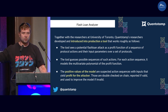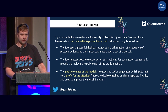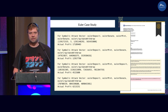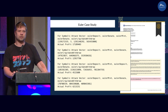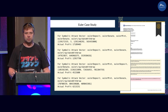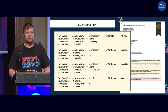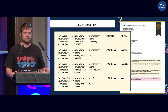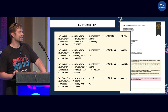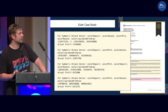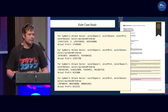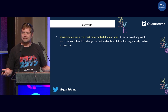We improve the models and keep searching. This is showing very, very good results. As I showed on that initial slide, we are able to find pretty much all the significant flash loan attacks and hacks from the past three years, including Euler. Here is an example of the output in our implementation for the Euler protocol.